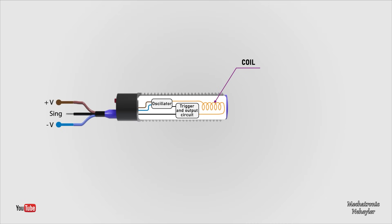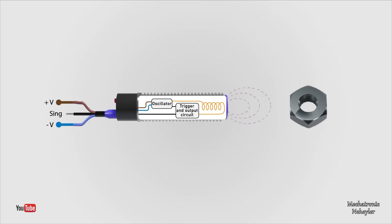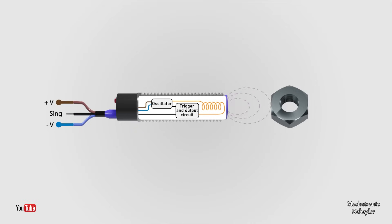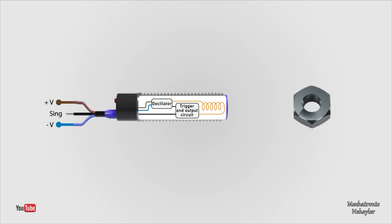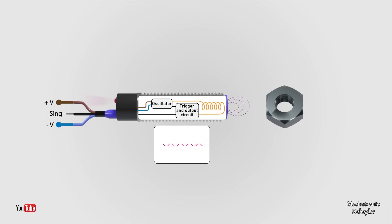The oscillator allows the coil to generate an electromagnetic field. When a metal object enters the electromagnetic field, an induction current, or eddy current, flows in the metal object due to electromagnetic induction. As the object approaches the sensor, the induction current flow increases, causing the load on the oscillation circuit to increase. Then the oscillation fades or stops. The sensor detects this change in oscillation state with the amplitude detection circuit and outputs a detection signal.